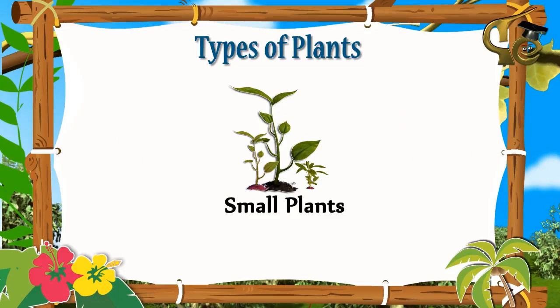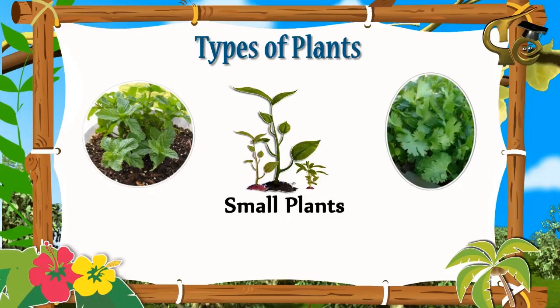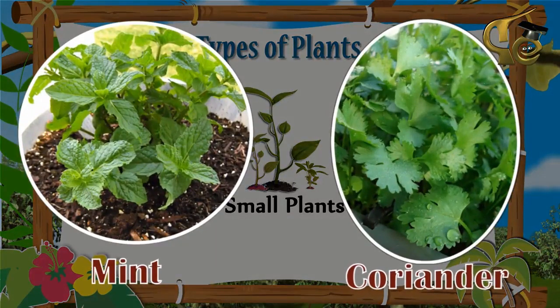Some plants are small and weak. Such plants are called herbs. Mint and coriander are examples of herbs.